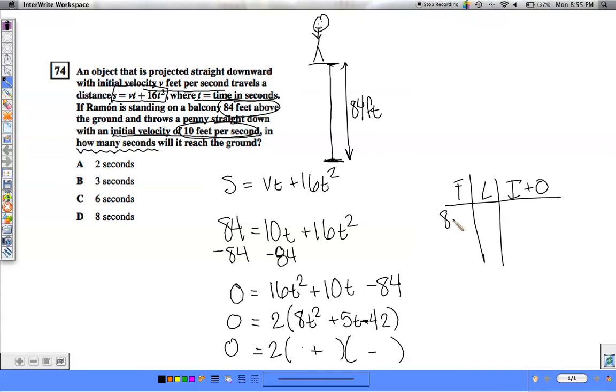We can take 8 times 1, 4 times 2, 2 times 4, or 1 times 8. And we're trying to get the last term to equal negative 42, so 6 times negative 7, 7 times negative 6.